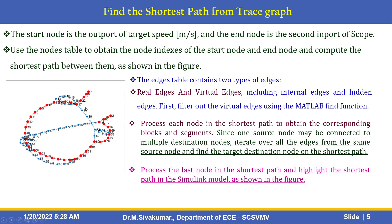After identifying the two types of edges, filter out the virtual edges using the MATLAB find function and process each node in the shortest path to obtain the corresponding blocks and segments. Since one source node may be connected to multiple destination nodes, it iterates over all edges from the same source node and finds the target destination node on the shortest path. Then process the last node in the shortest path and highlight the shortest path in the Simulink model.